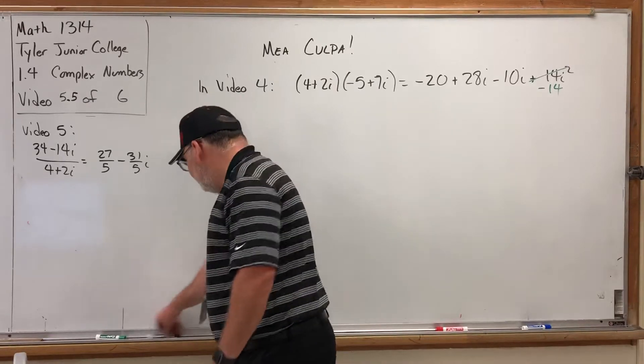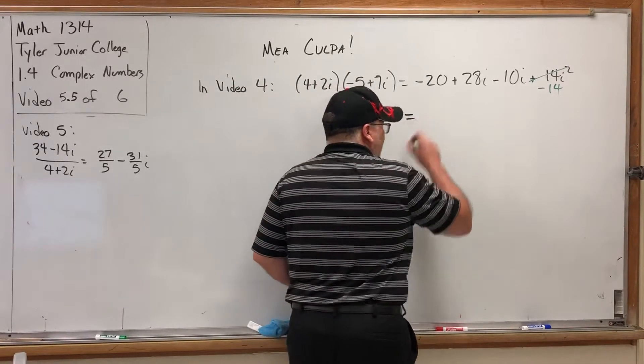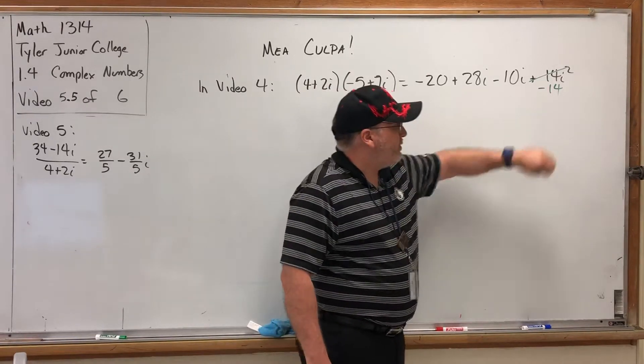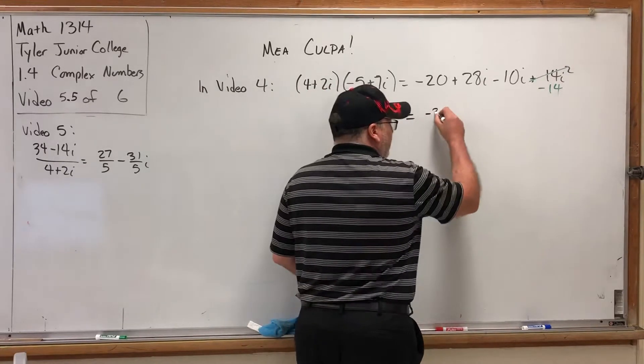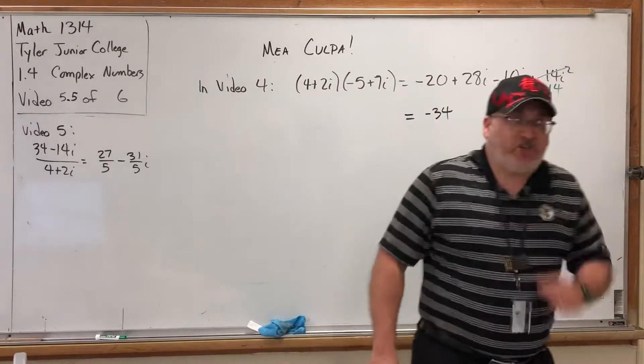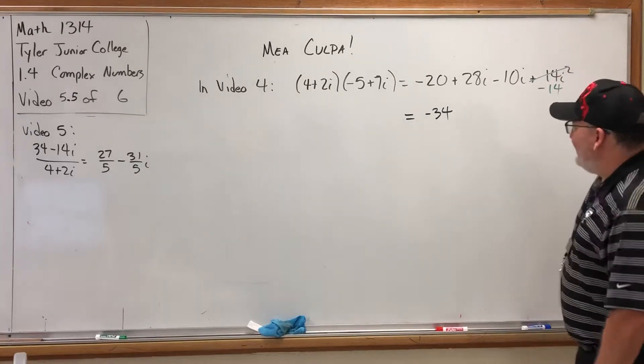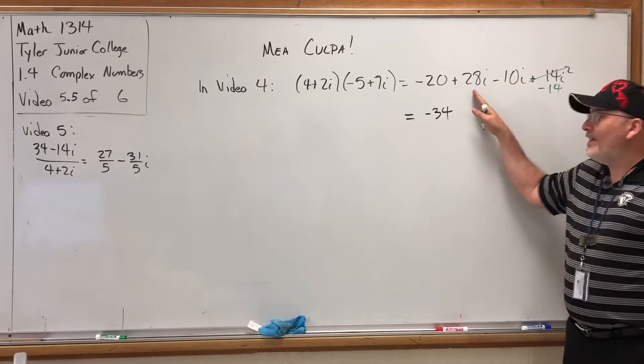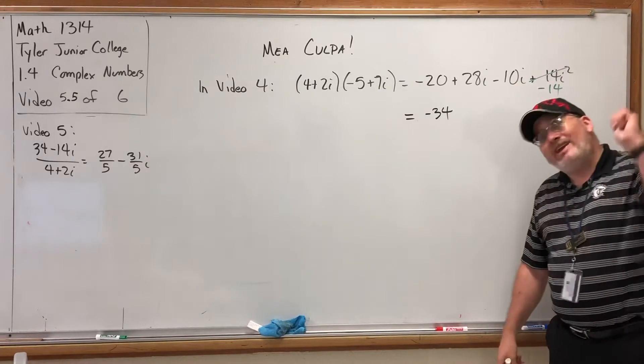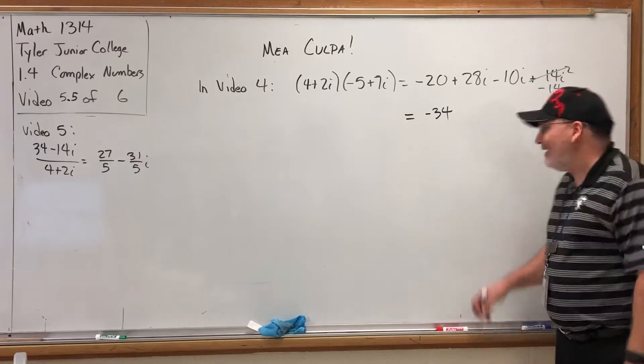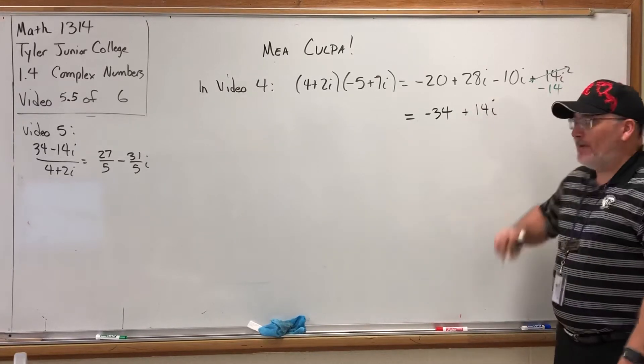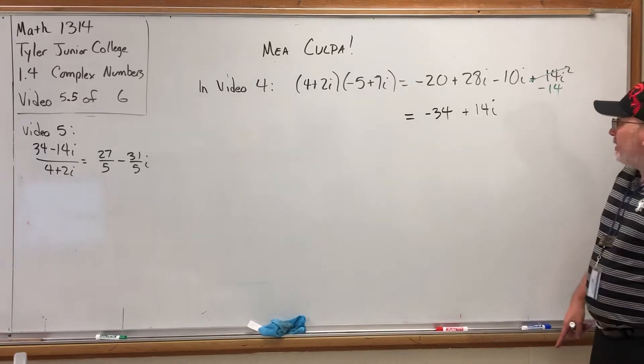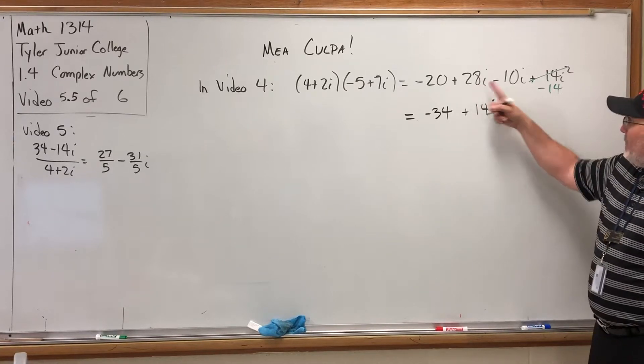Then we combined terms. During that combination of terms, the -28 and the -14 were combined correctly into -34. But as I was rewatching video 4, I said that +28i and -10i combined to give +14i, which is where I made the mistake. I think when I was talking and writing I was looking here but I was also looking here and combined the incorrect terms.